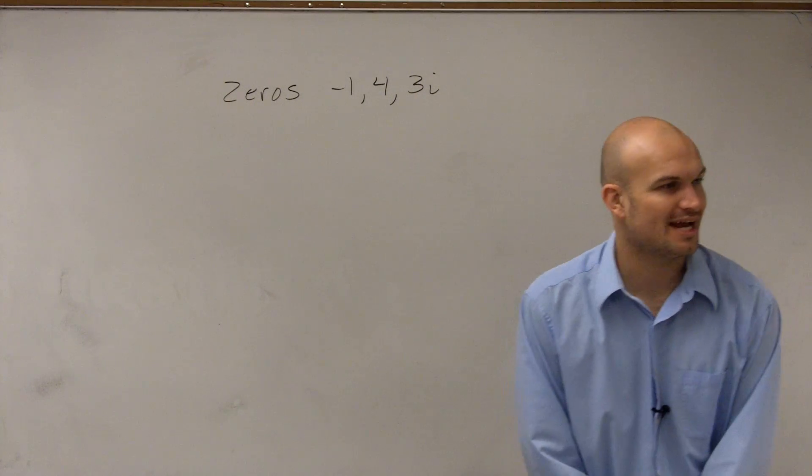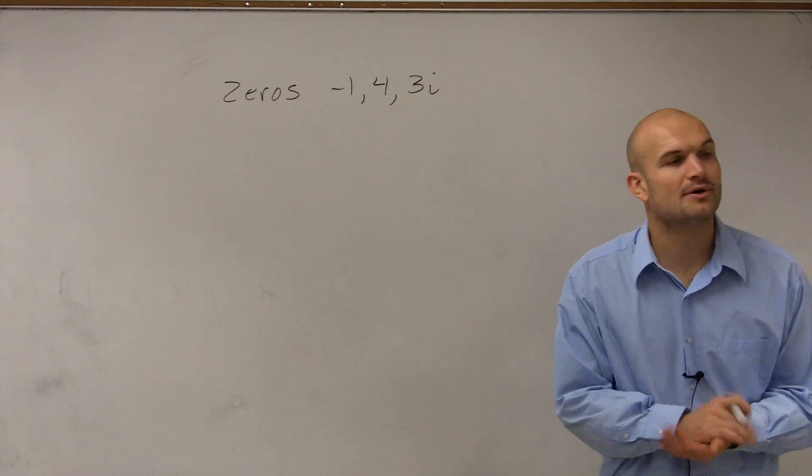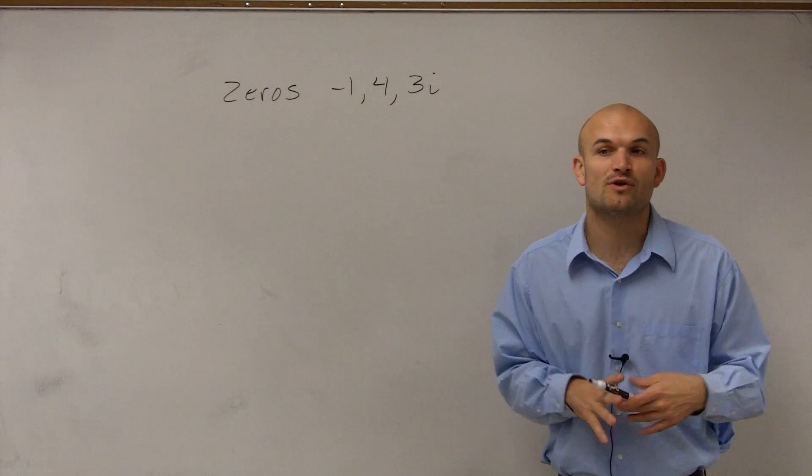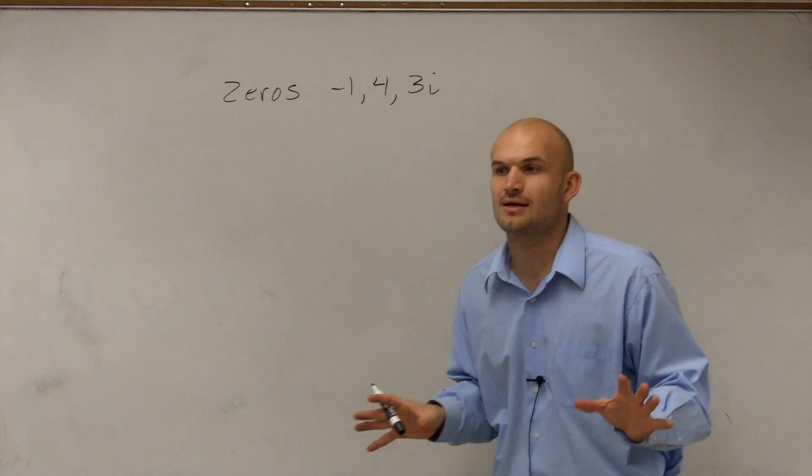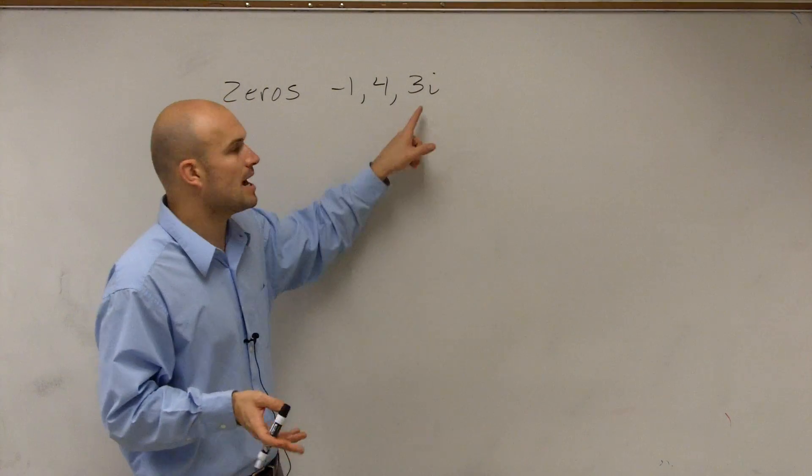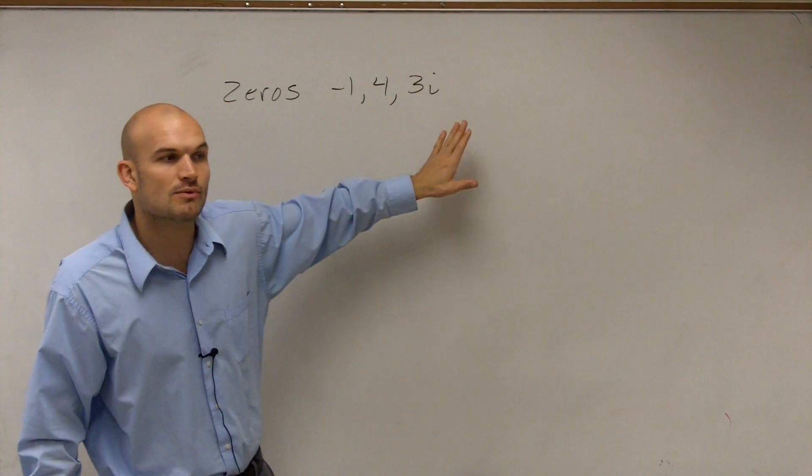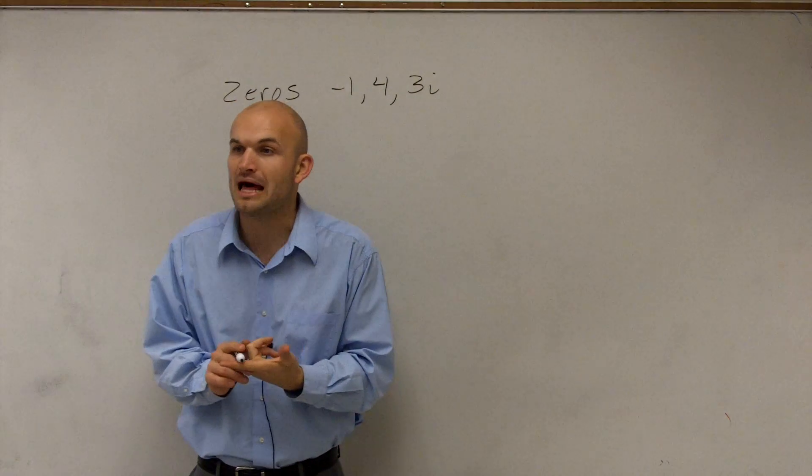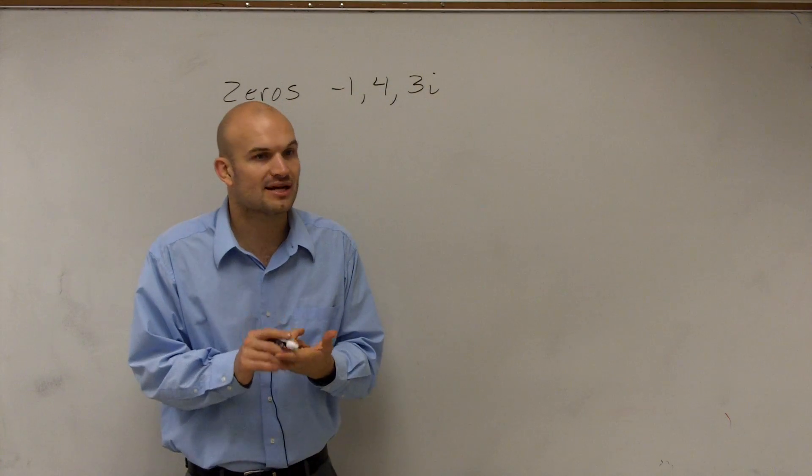So here we have our zeros, negative 1, 4, and 3i. I'm going to go through this a little bit quicker because I think you guys got a good idea of how to find the zeros when we were just given real numbers. But now we notice we have an imaginary number. So when we have an imaginary number, we have to apply the complex conjugate theorem.